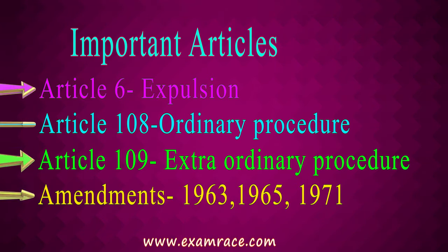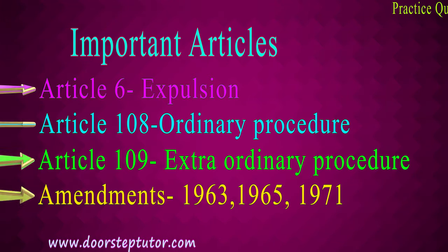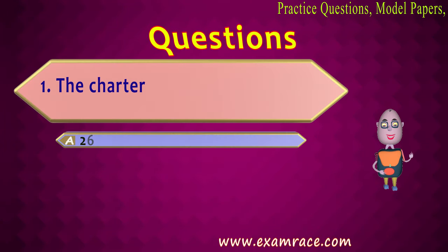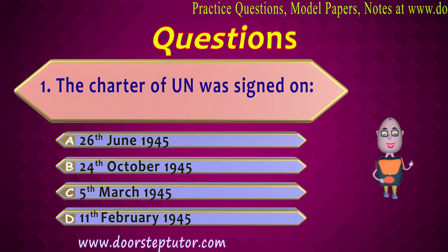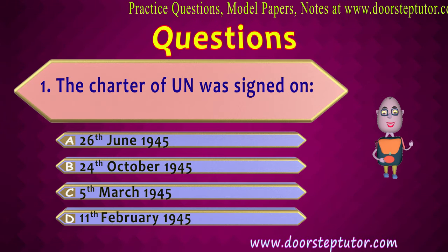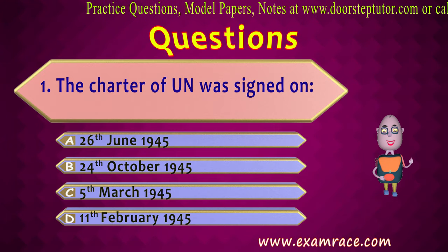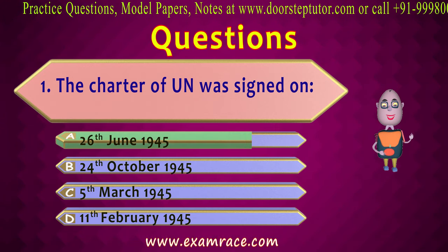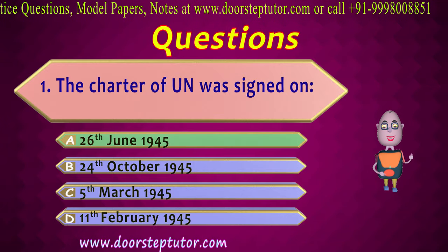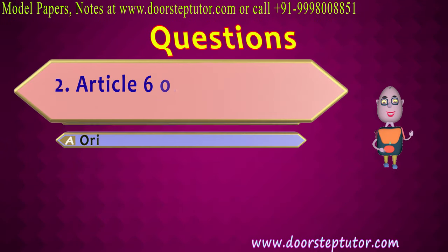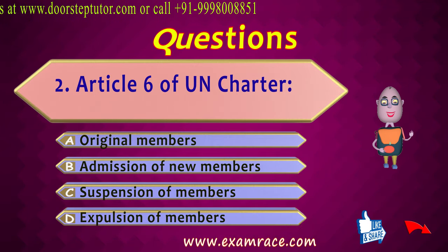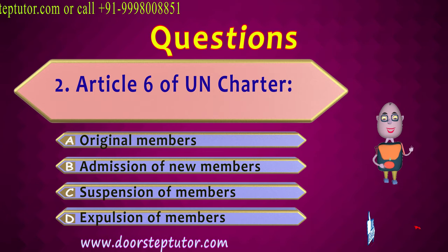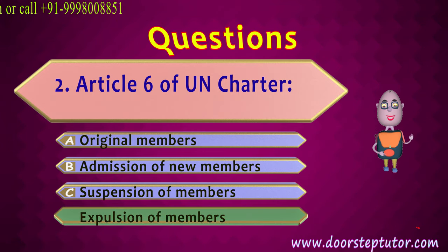Amendments in the ordinary procedure were made in 1963, 1965, and 1971. Now for practice questions: First — the UN Charter was signed on which date? Options: (1) 26th June 1945, (2) 24th October 1945, (3) 5th March 1945, (4) 11th February 1945. Answer: 26th June 1945. Second — Article 6 of the UN Charter deals with: (1) original members, (2) admission of new members, (3) suspension of members, (4) expulsion of members. Answer: expulsion of members.